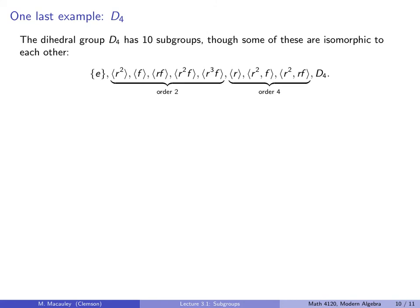So we'll do one more example. That's D4. Now D4 has 10 subgroups, though a lot of these groups are isomorphic to each other. So there's the trivial group of size 1, or order 1. There's the entire group of order 8. Here are five groups of order 2. These are all orbits. And then there are three subgroups of order 4. This one is cyclic, and these two are not, so they are isomorphic to the Klein 4 group.